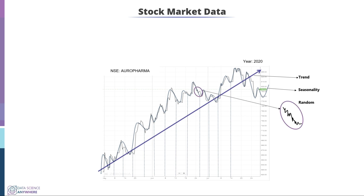And finally, irregular or randomness — which we cannot predict or measure. If you zoom in and investigate the pattern in this location, it is completely noisy. That is called irregular. These are the four important components which are very much required and need to be analyzed, as they are useful for forecasting time series data.